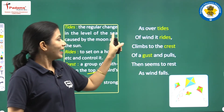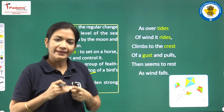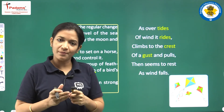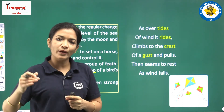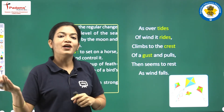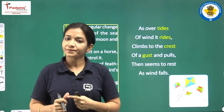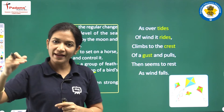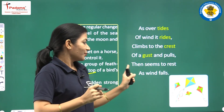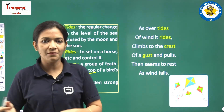Now let's get started. 'As over tides of wind it rides, climbs to the crest of a gust and pulls.' The poet compares the kite with a ship moving in a big ocean, moving according to the tides with the action of the water. Similarly, the kite flies in the sky with the movement of the wind. 'Then seems to rest as the wind falls.' When the wind flows at great speed the kite flies very high and beautifully, but when the wind slows down the kite cannot fly properly and comes down.